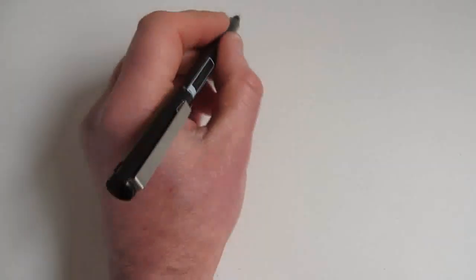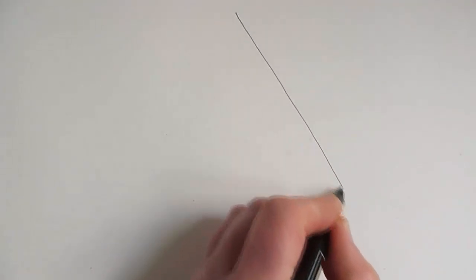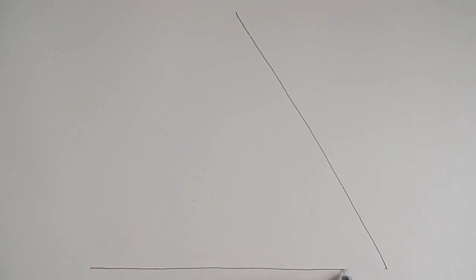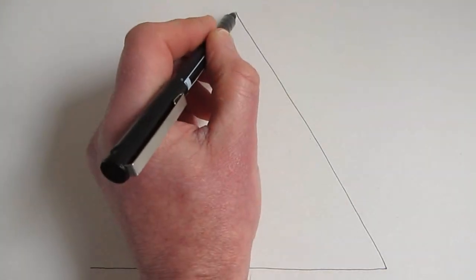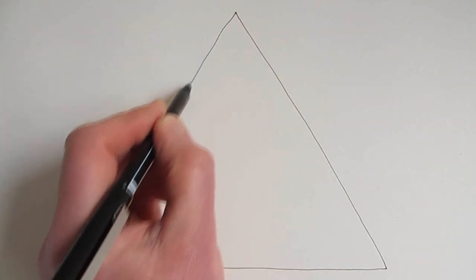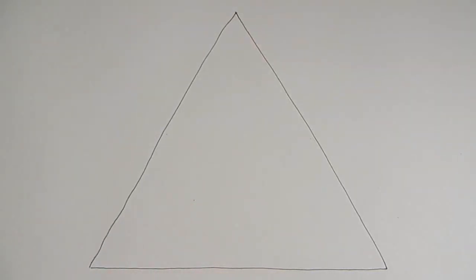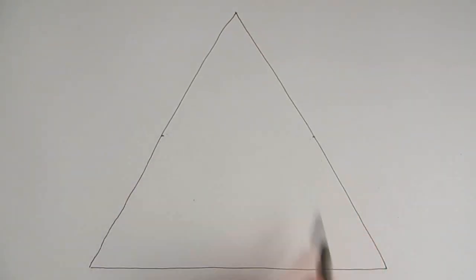To draw this triangle, I start by drawing an equilateral triangle — a triangle where each side is of equal length. You could use a ruler for your straight lines, or you could just do it by eye. Next, I draw a dot at the halfway point of each side of this first triangle.